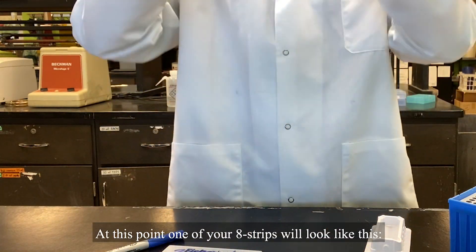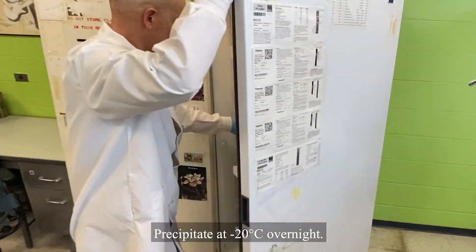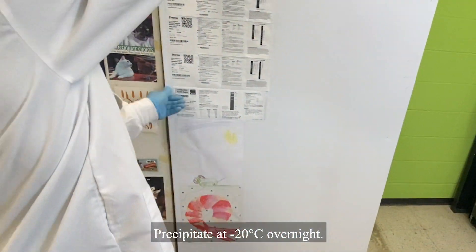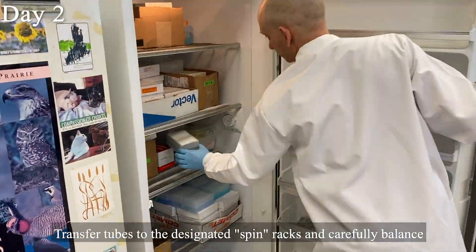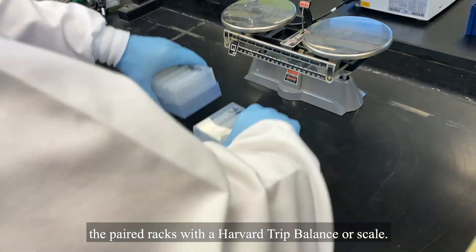At this point, one of your eight strips will look like this. Precipitate at minus 20 degrees Celsius overnight. Transfer tubes to the designated spin racks and carefully balance the paired racks with a Harvard trip balance or scale.